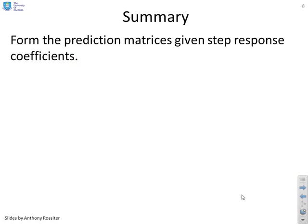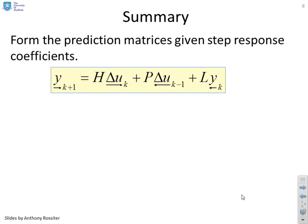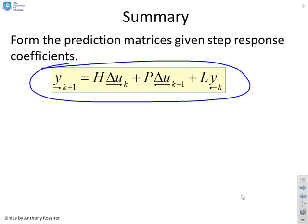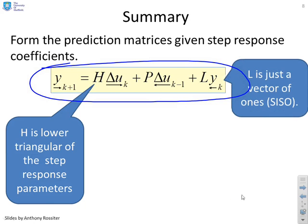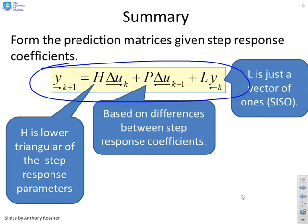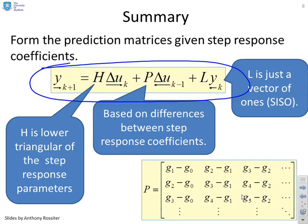So what's the summary? What we're going to do is form the prediction matrices using the step response coefficients. I can write down that my prediction matrix with step response coefficients is given like this: Y future equals H Δu future plus P Δu past plus L y past. And what you can see is H is basically the Toeplitz of the step response parameters. L is just a vector of ones. And P is based on the differences between step response coefficients. But the key thing is you can write them all down by inspection given the step response coefficients.